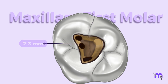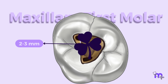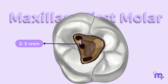It was 2–3 mm palatal to the mesiobuccal canal, in the direction of an imaginary line connecting it to the palatal canal. The shape of the access cavity was now transformed into a shamrock or cloverleaf preparation. The distobuccal orifice was present slightly distal and palatal to the mesiobuccal orifice.